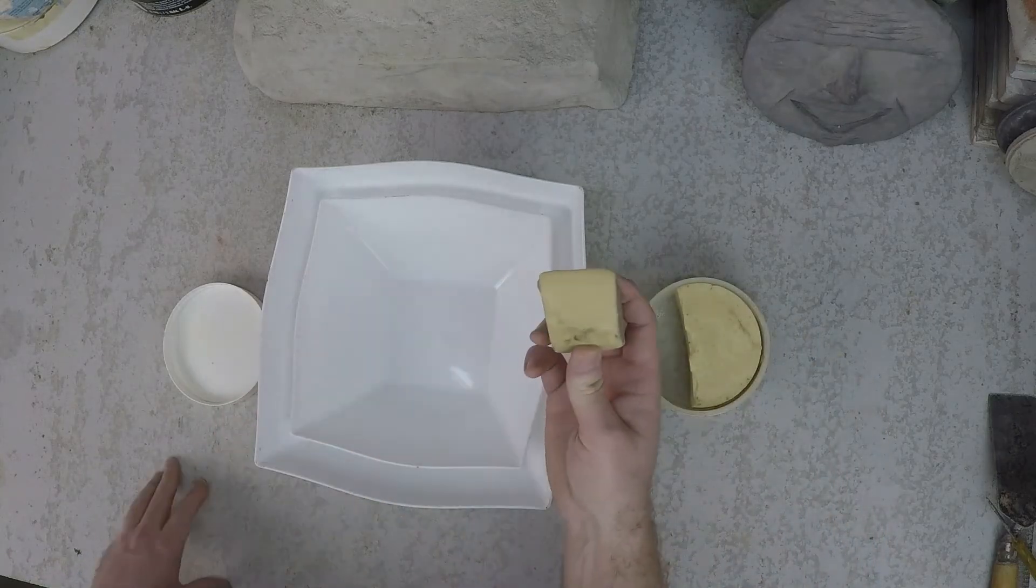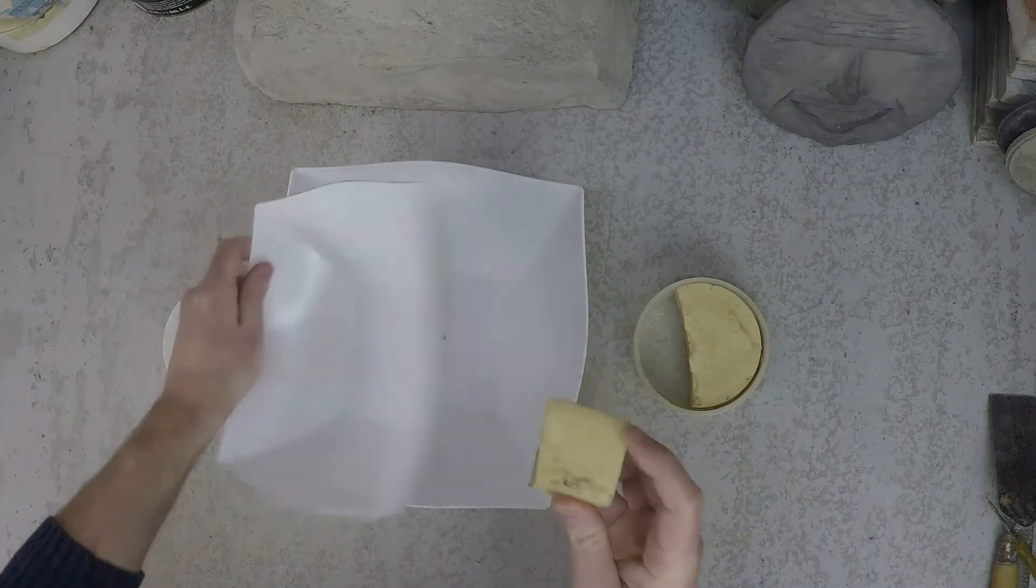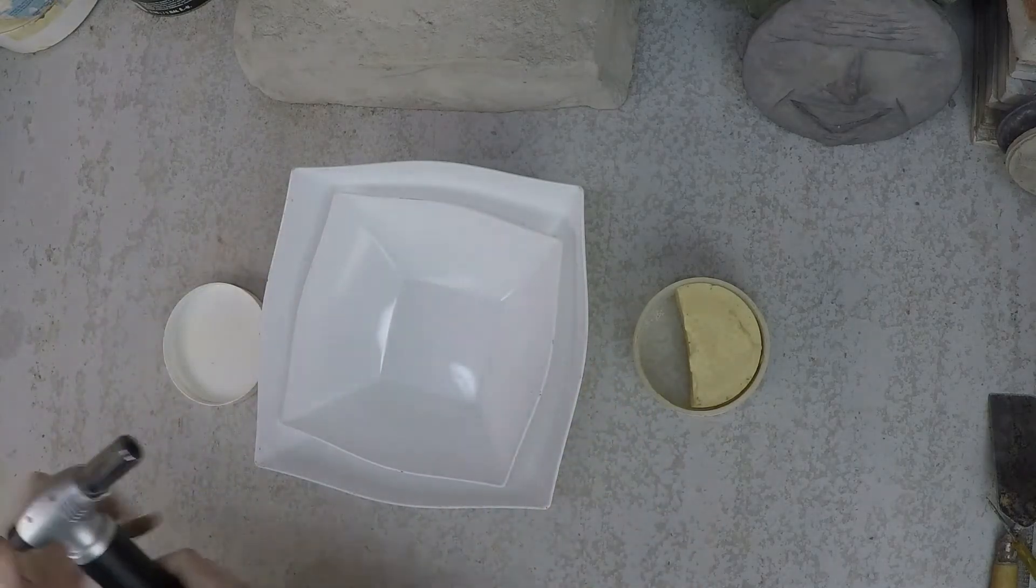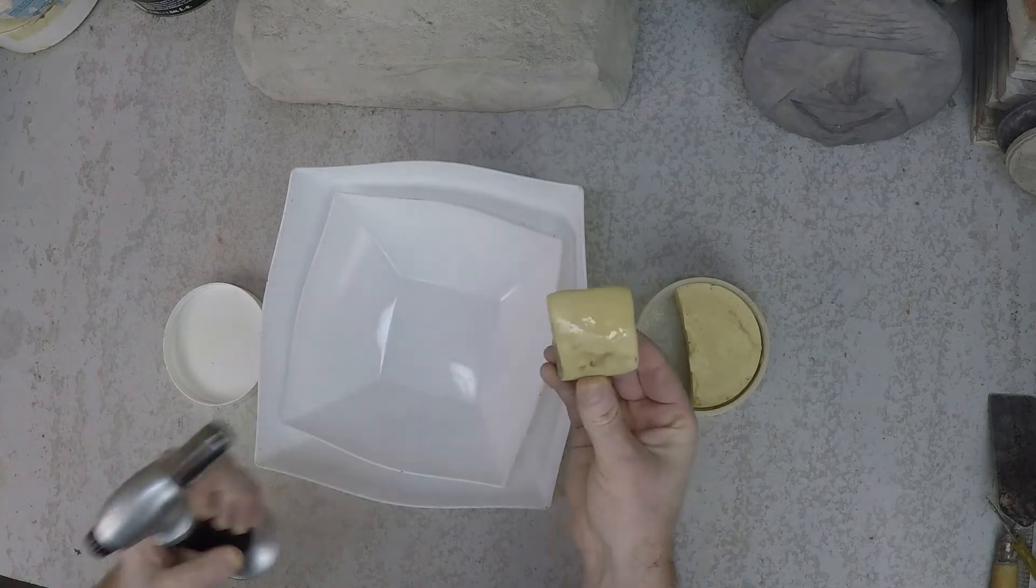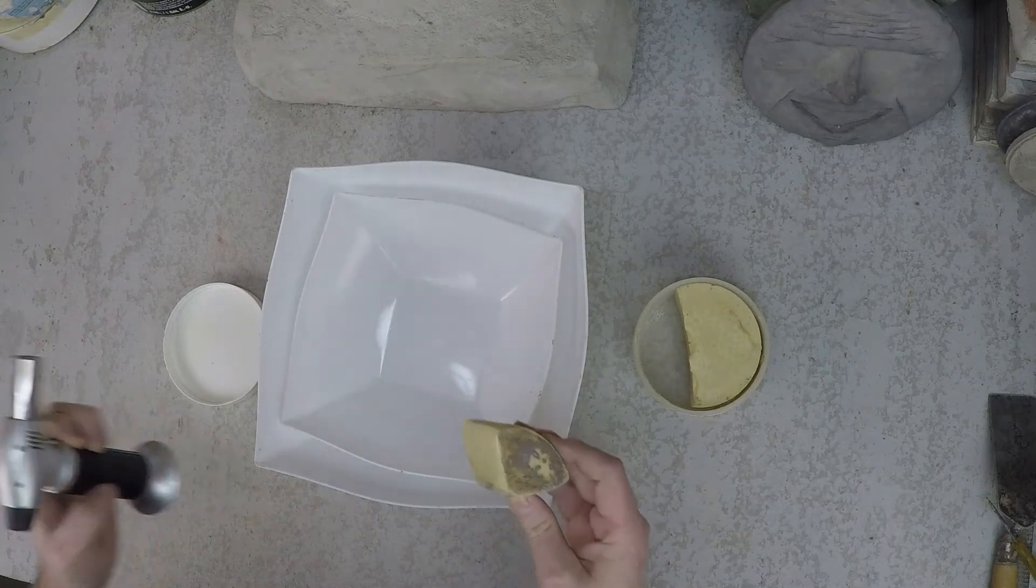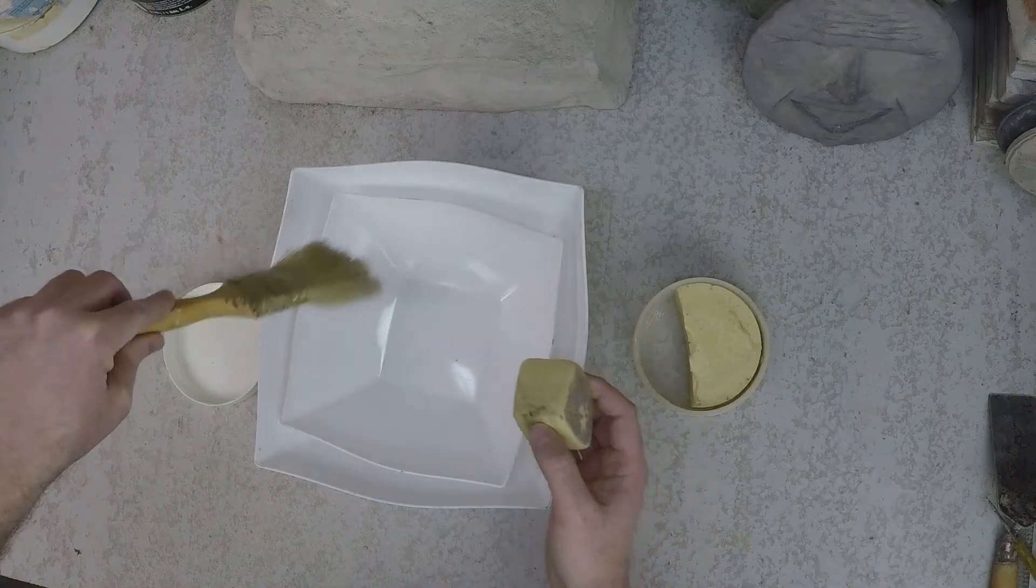Now, applying wax like this is a little bit difficult. It's not really going to apply very evenly, so what I would normally do: apply a little bit of heat, works really quick, and now you can apply that to your mold. It would be helpful to use a heavy brush to help apply the wax to the mold.